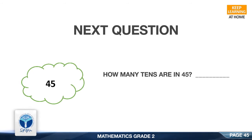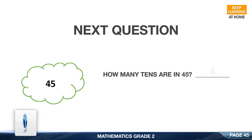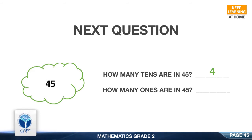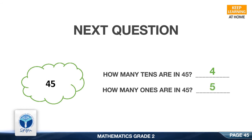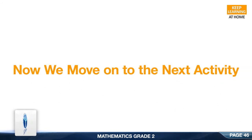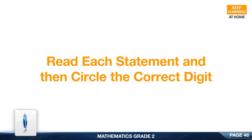Next question: 45. How many tens are in 45? Good, it is 4. How many ones are in 45? Good, it is 5. Now we move on to the next activity: Read each statement and then circle the correct digit.